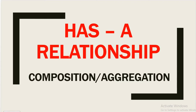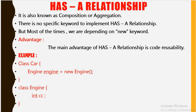Welcome to this channel 'Gain Java Knowledge.' Today we are going to discuss the has-a relationship, which is also known as composition or aggregation. There is no specific keyword to implement the has-a relationship.